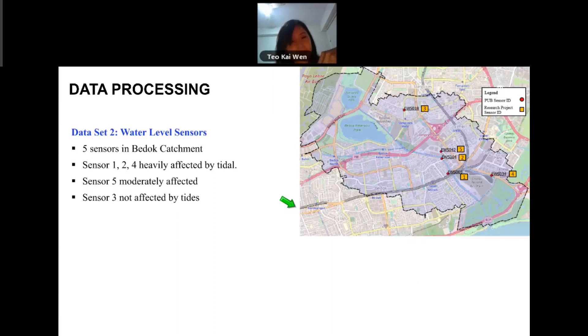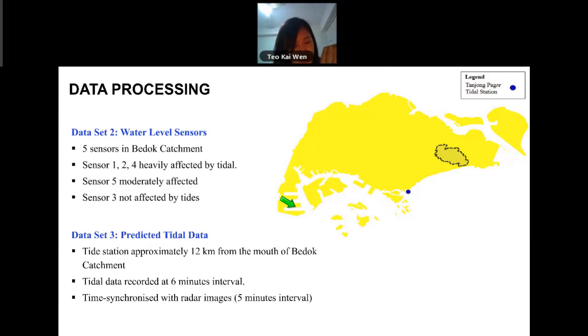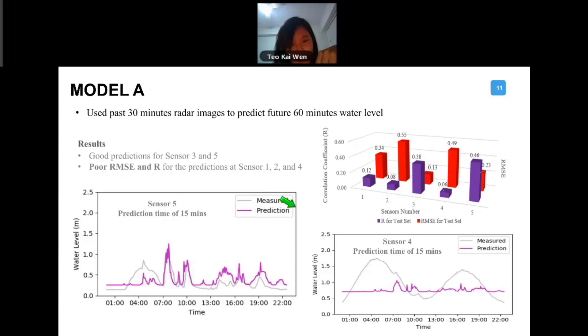In terms of other datasets that we are working with, water level sensors - you can see that there are five sensors in the catchment. Sensors one, two, and four are heavily affected by tidal. Sensors five and three are not really affected by tides. We also use predicted tidal data as well, and we need to time-code it to synchronize it to five-minute intervals.